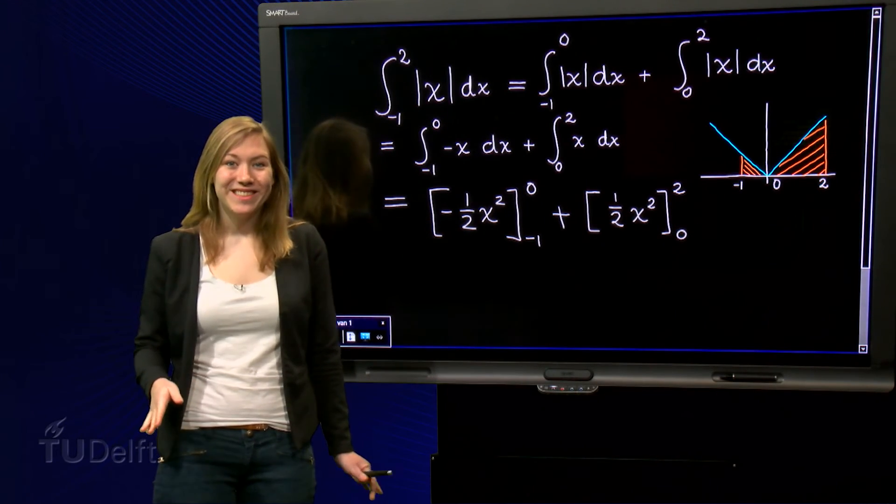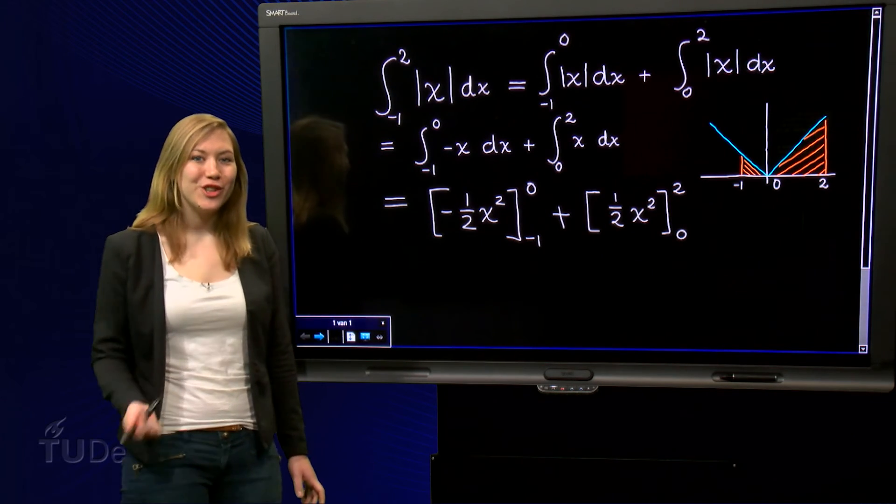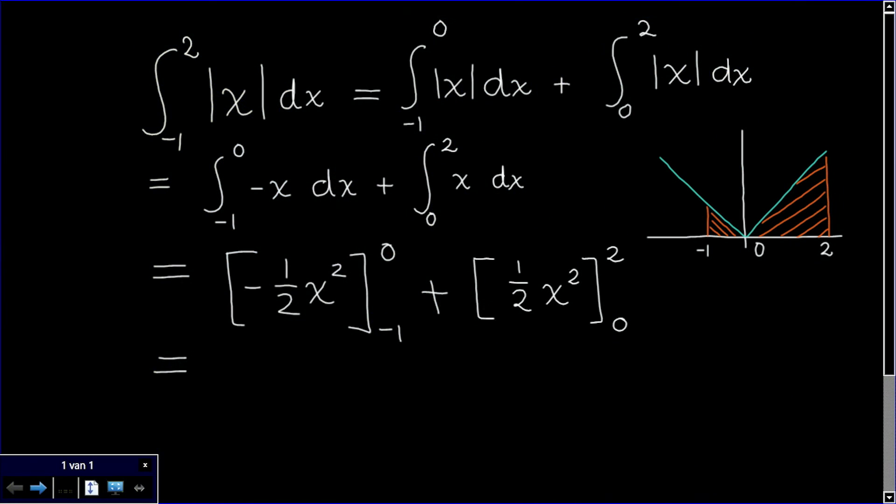And don't forget to use the right boundaries. Using the fundamental theorem of calculus we can thus evaluate the first integral. This gives us minus 1 half times 0 squared minus minus 1 half times minus 1 squared.